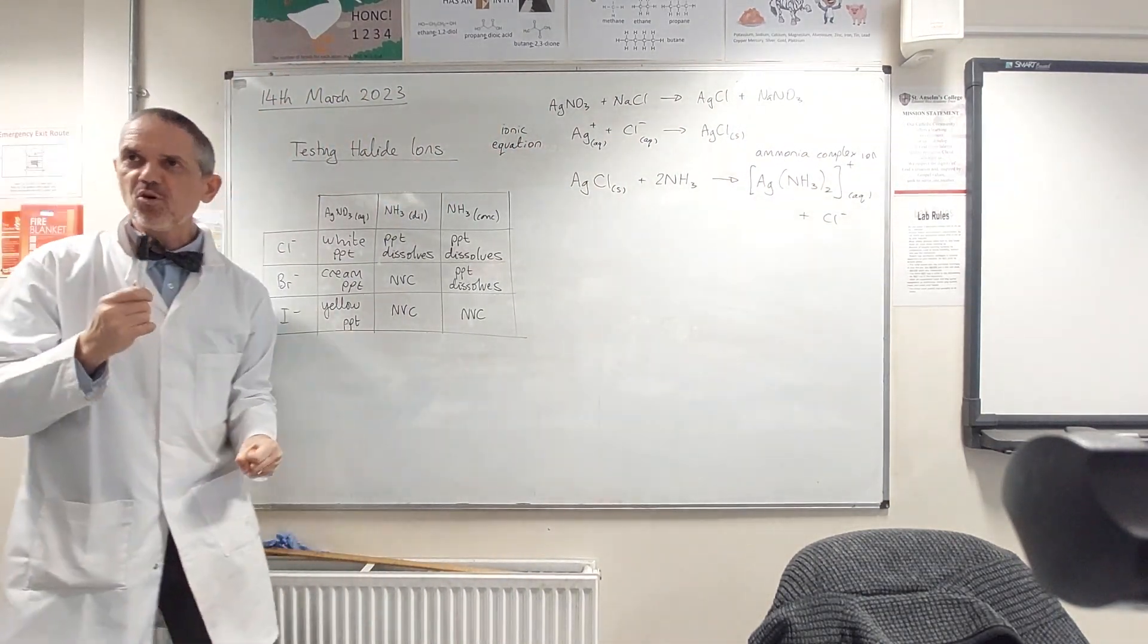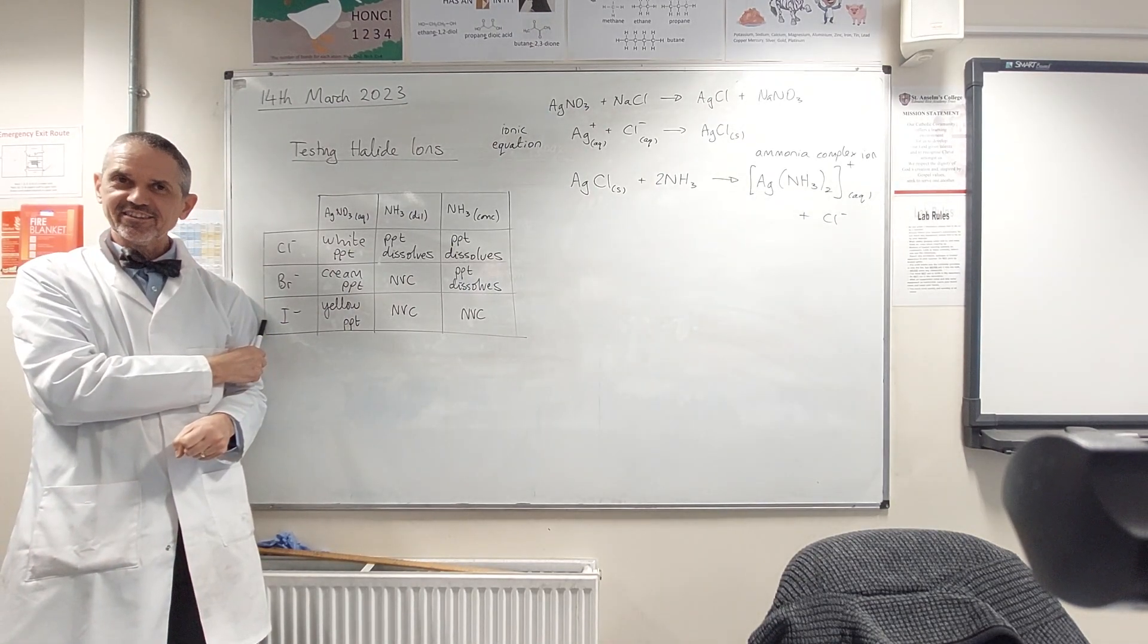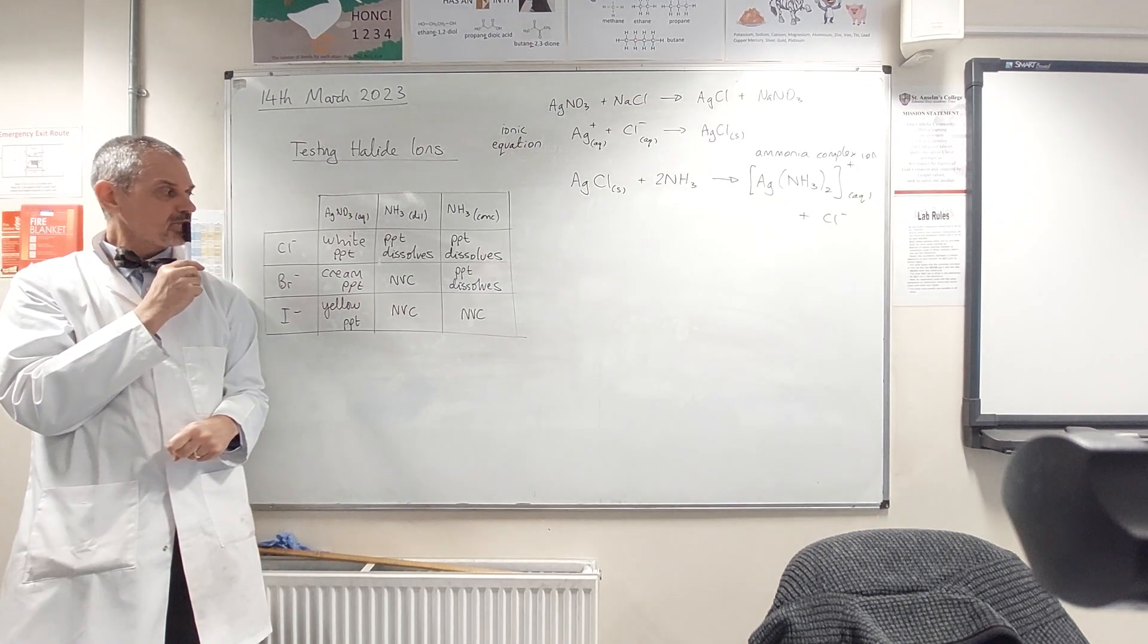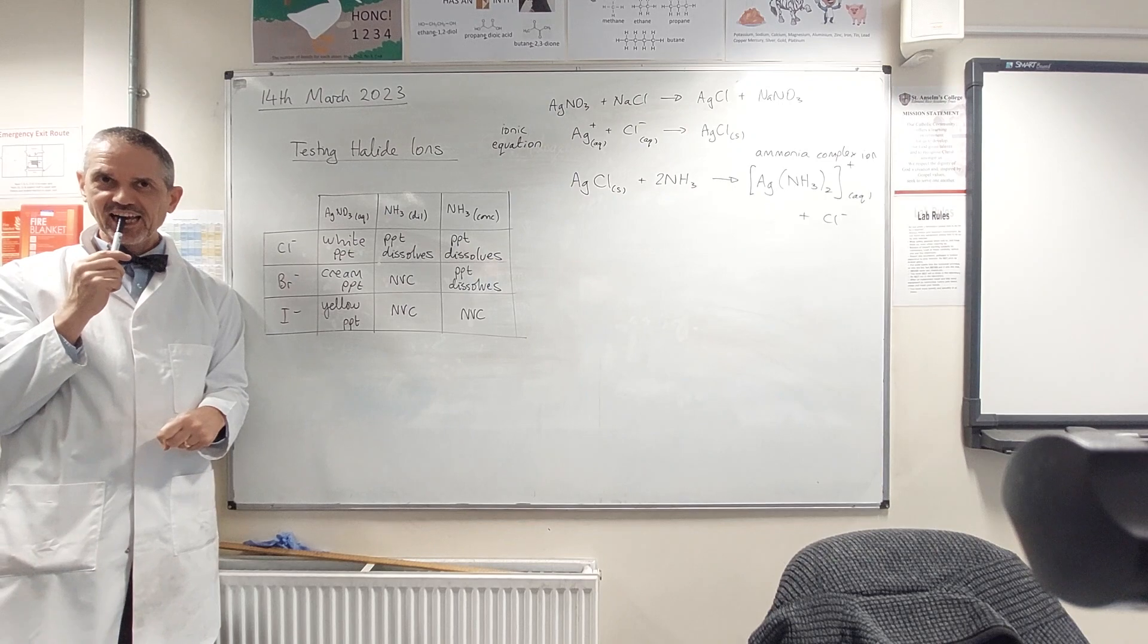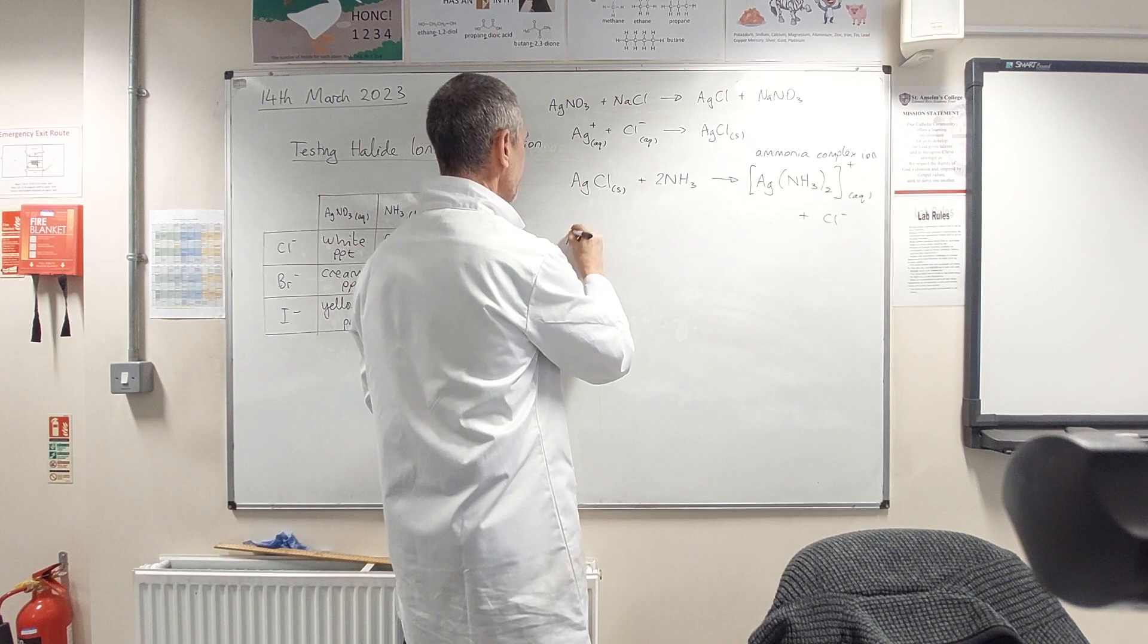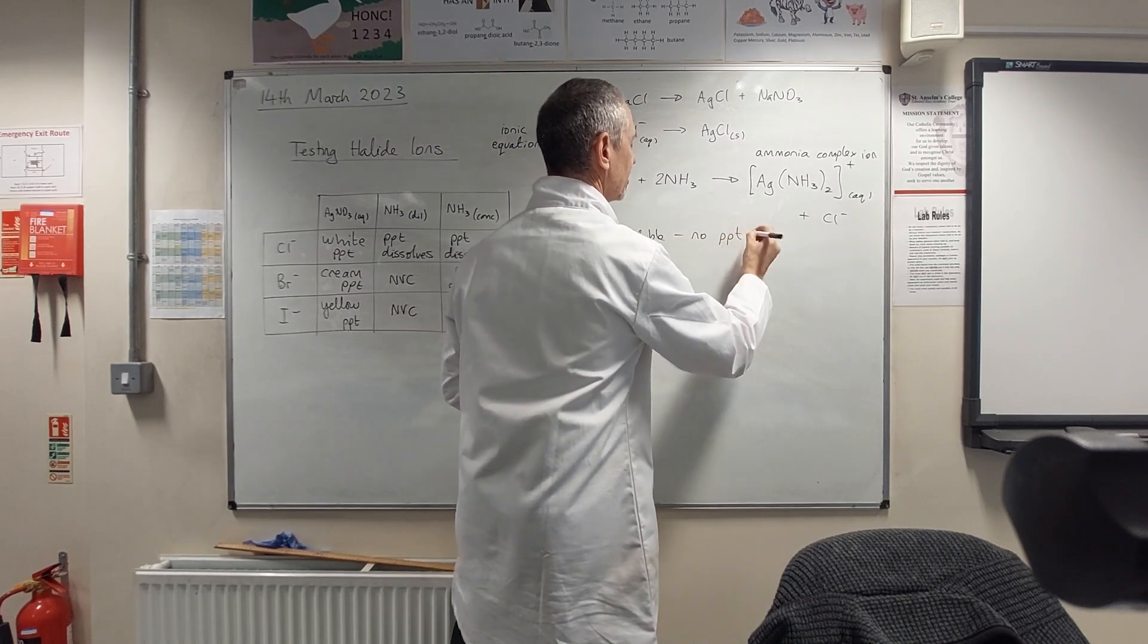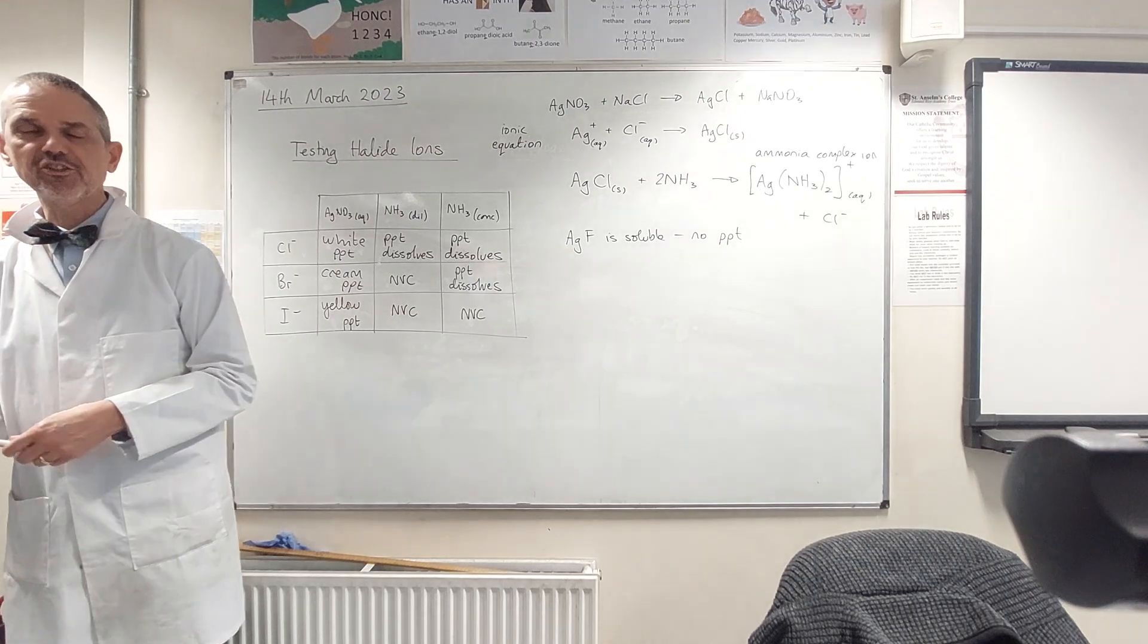Just one more thing before we finish. There's a missing halide here, and it's not astatide because there's not enough on the planet. Fluoride. Fluoride. What happens with fluoride and silver nitrate? Nothing. Fluoride. Is it the right answer? Yeah. So silver fluoride is soluble. So you get no precipitate when you add silver nitrate to a solution of fluoride.